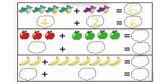Now next one. How many apples are there? 1, 2, 3. So we can say left side there are 3 apples. Now right side, we will count: 1, 2, 3 and 4. So here there are 4 apples. Now we will count all together: 1, 2, 3, 4, 5, 6 and 7. It means 3 plus 4 is equal to 7. So let's write it: 3 plus 4 is equal to 7.